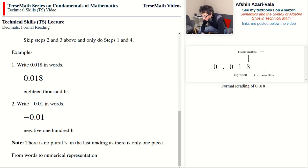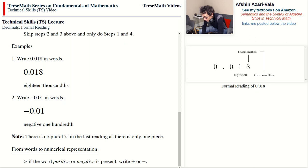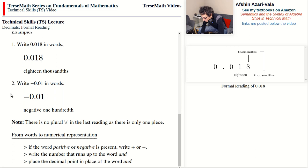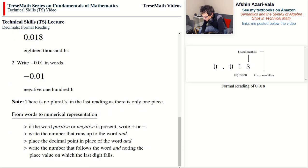Now we go the other way. Suppose a number is written in words and you want to represent it using numerical digits. If the word positive or negative is used, we write the corresponding sign. Then we write the whole part — the part up to the word 'and.' We put the decimal point in place of the word 'and,' and then write the digits corresponding to the fractional part, making sure the last digit falls on the correct place value.